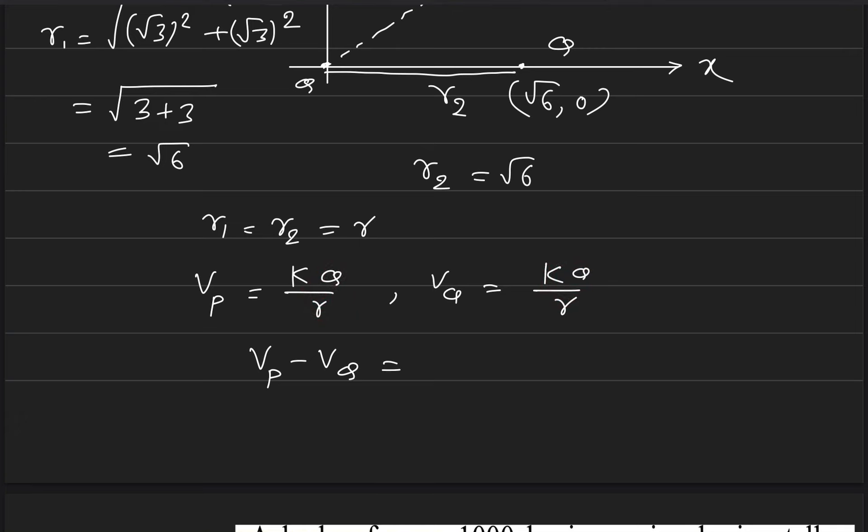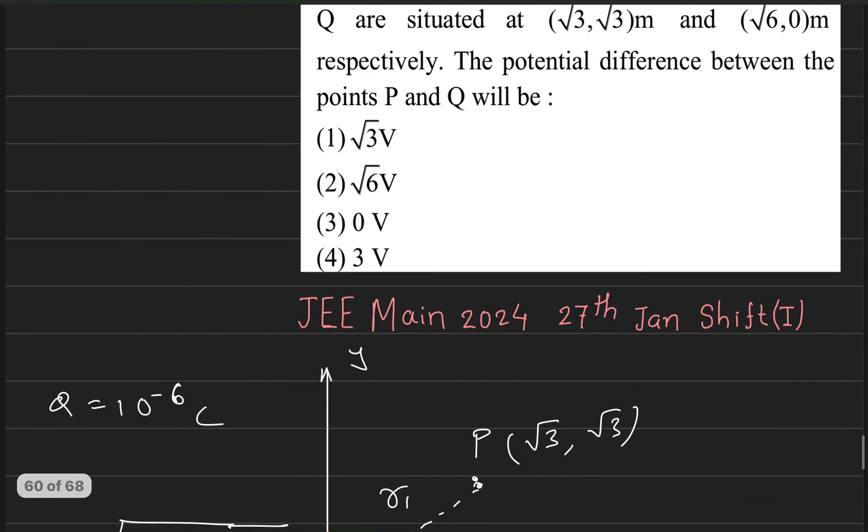So the potential difference will be 0, because kq upon r minus kq upon r equals 0. This answer will be 0, option number three, zero.